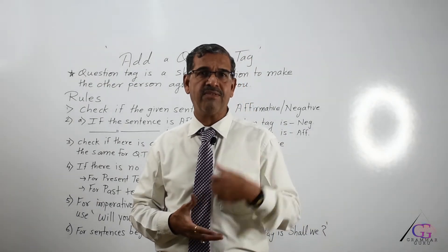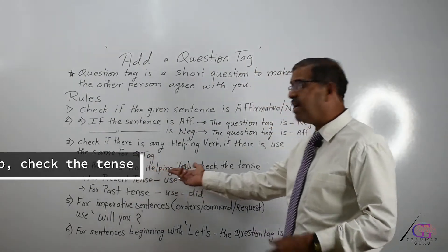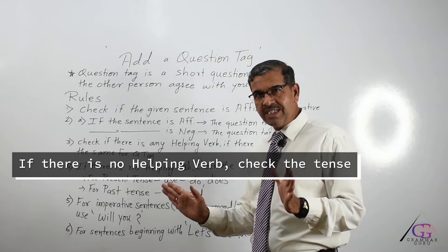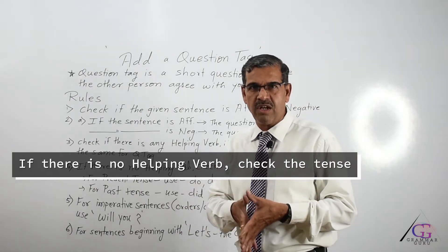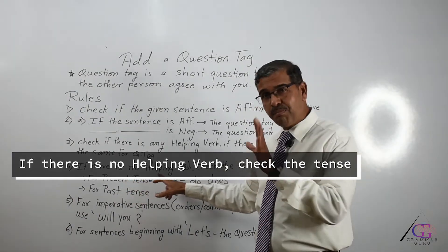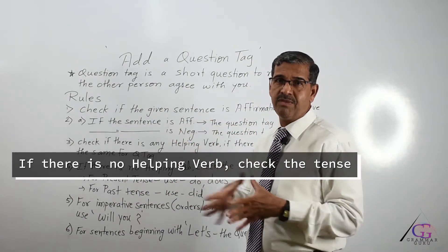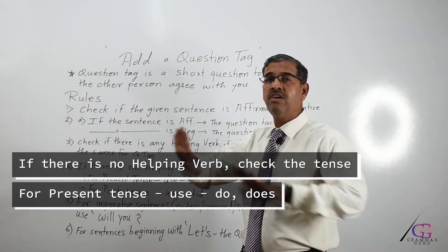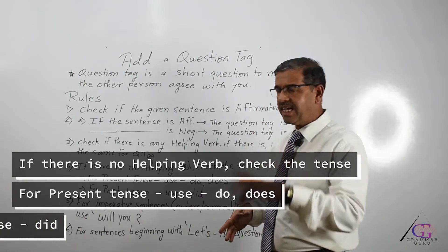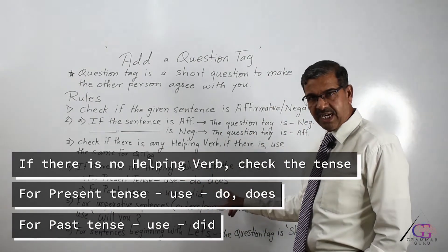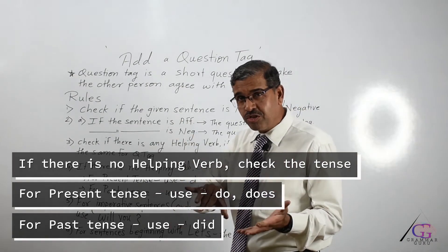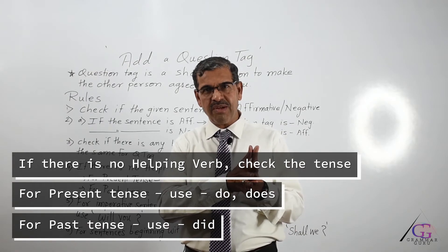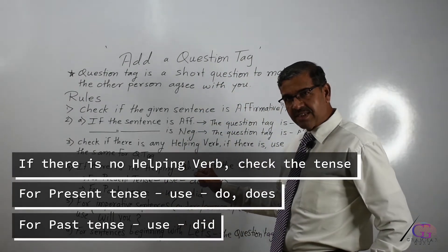Rule 4: If there is no helping verb in the sentence, check the tense. There are millions of sentences in English where no helping verb is used. If the sentence is in the present tense and there is no helping verb, we take the help of 'do' or 'does.' For past tense with no helping verb, we use 'did.'